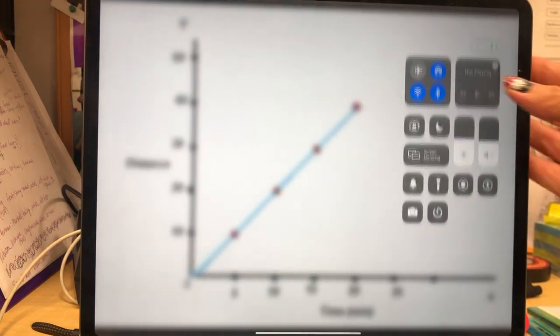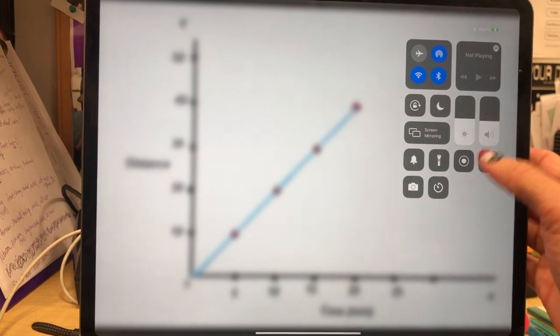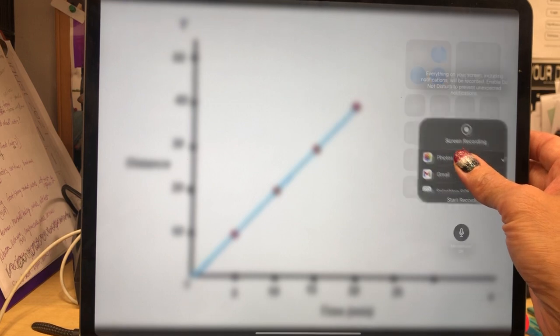So what I'm going to do is pull down over here in the corner of my screen to get the Control Center. There you can see my little record button, so I'm going to press and hold that.